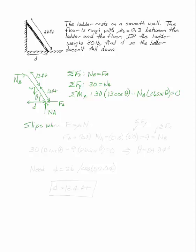Now this thing will slip. Impending motion happens when F equals mu times N. That is when Fa is 0.3, that's our coefficient of static friction, times the normal force at a. The normal force at a, by our sum of the forces in y, is 30 pounds. So Fa has got to be equal to 9.